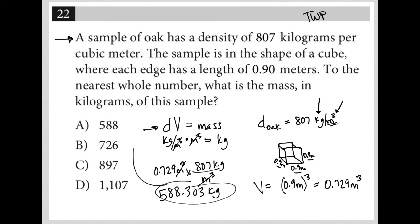This means my answer must be choice A. The question asks for the nearest whole number, so 588 is the best answer here.